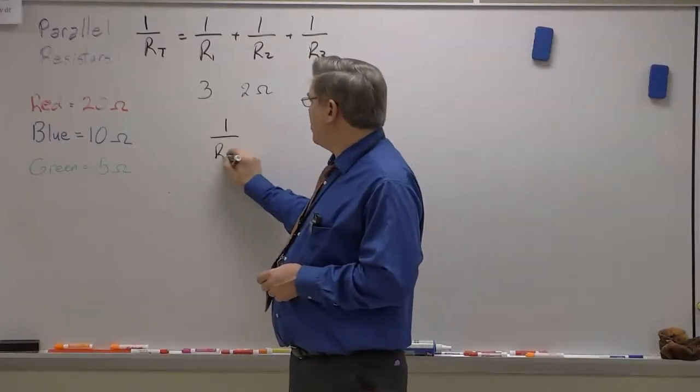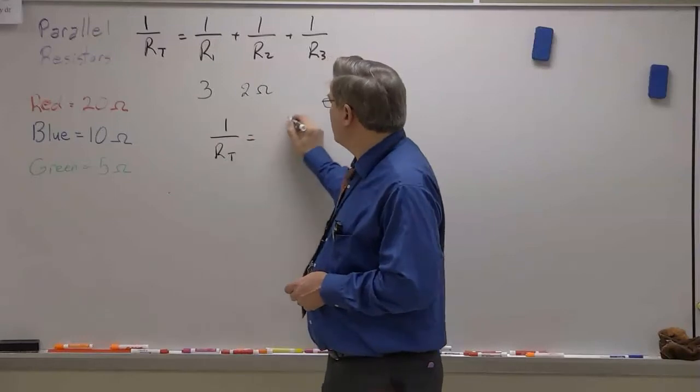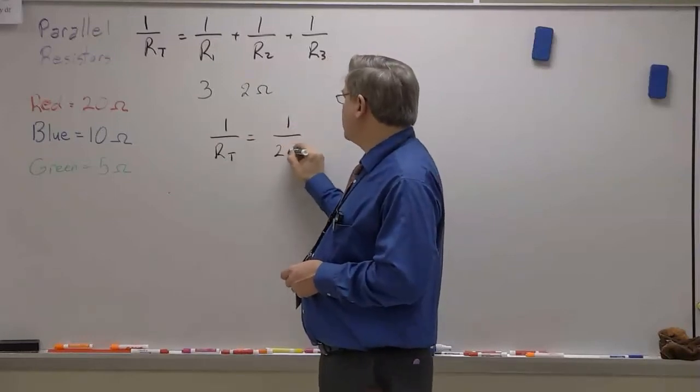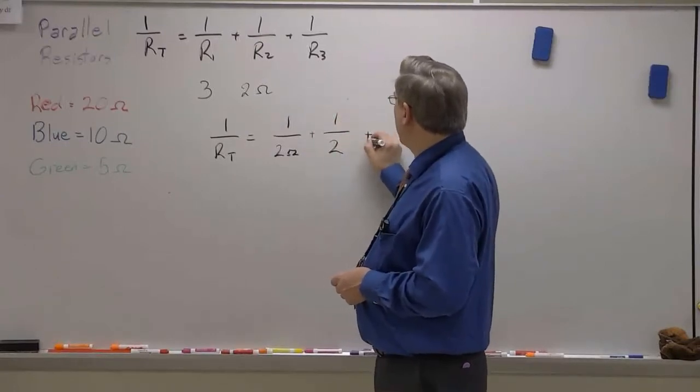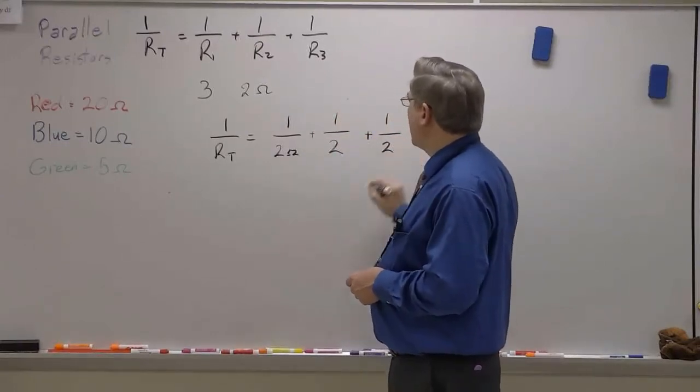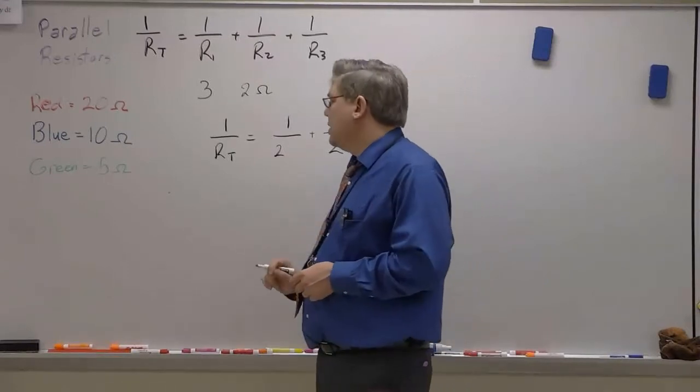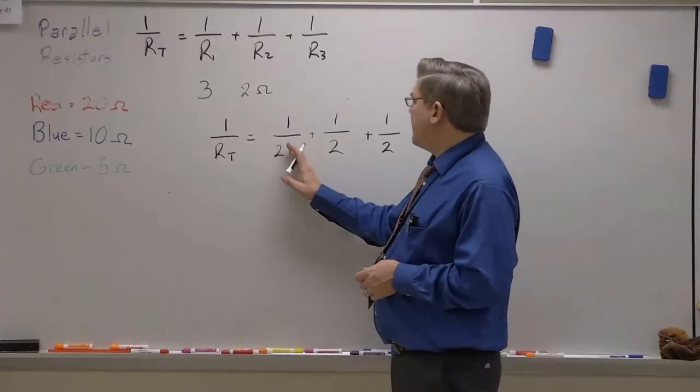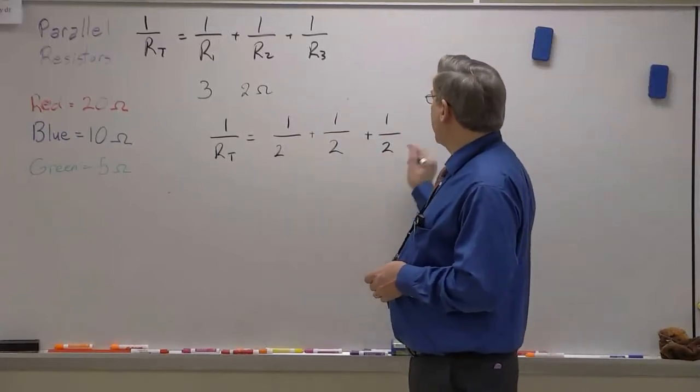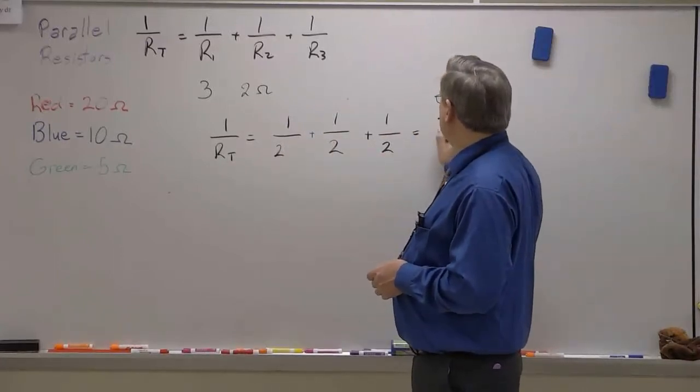So in that case, I would say that 1 over the total resistance is equal to 1 over 2 ohms plus 1 over 2 ohms plus 1 over 2 ohms. So if I add all of these up, I have 1 half plus 1 half plus 1 half. So that's equal to 3 halves.